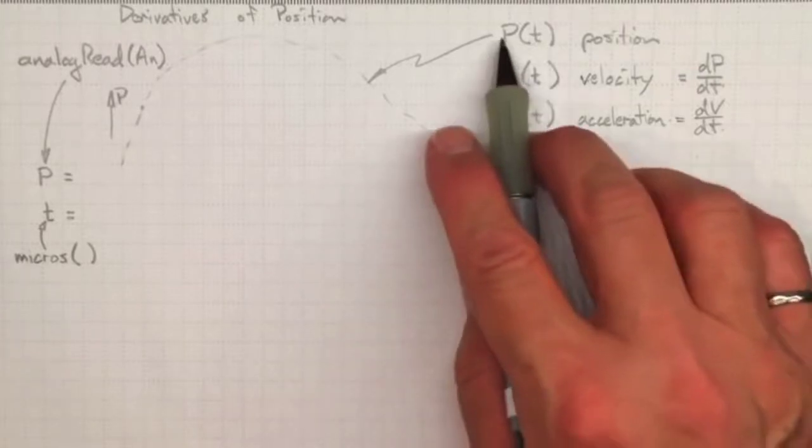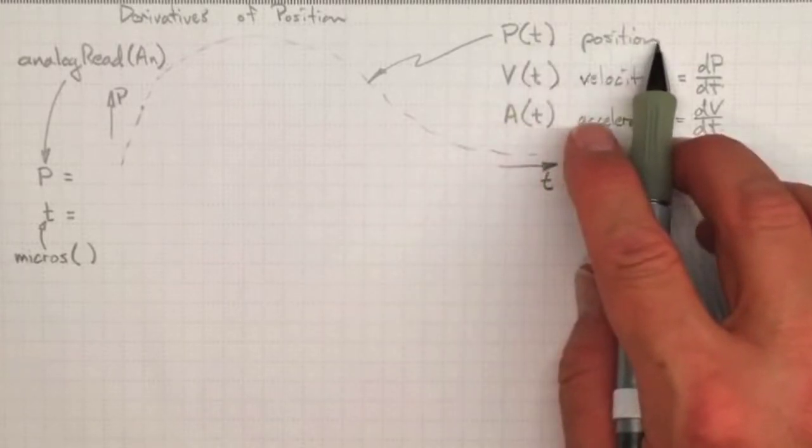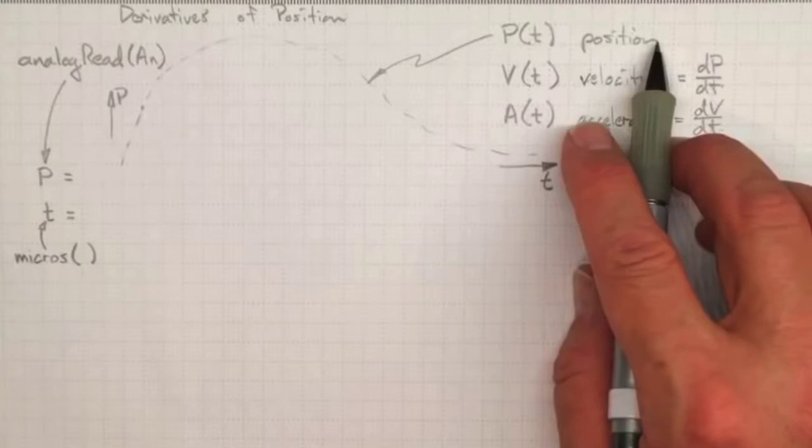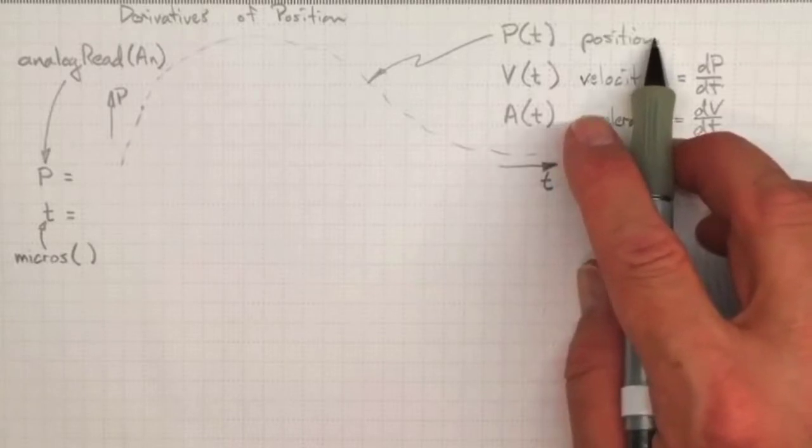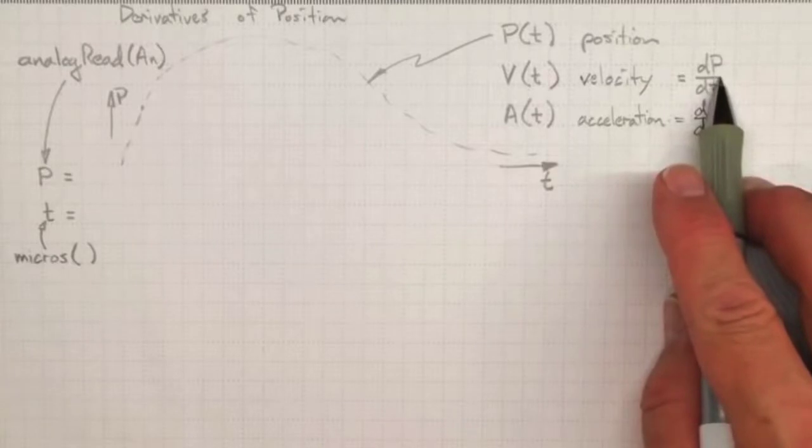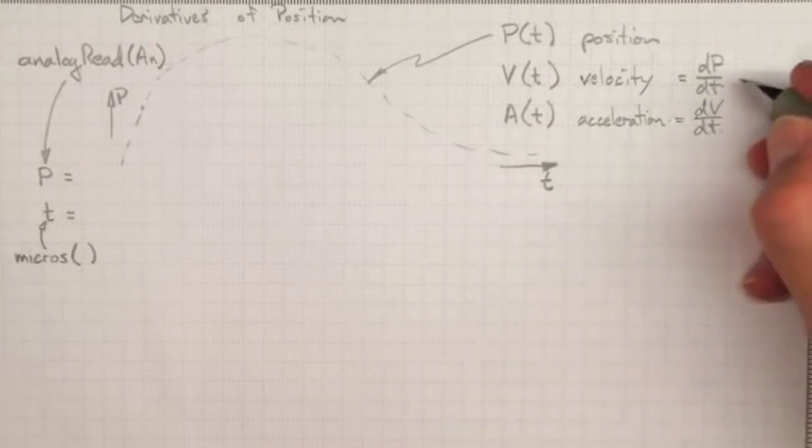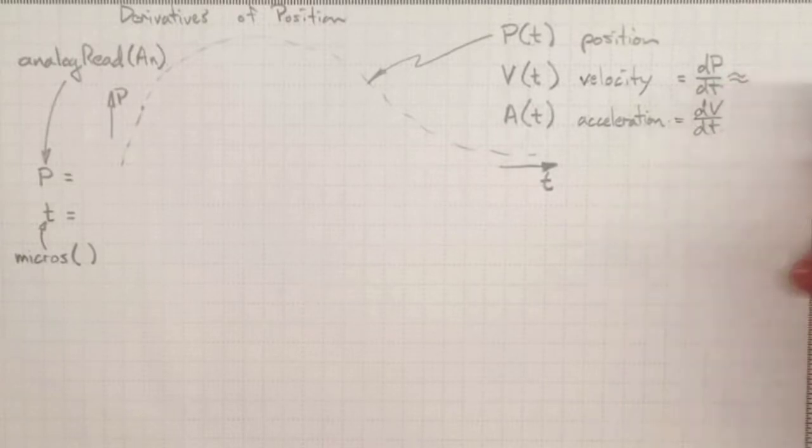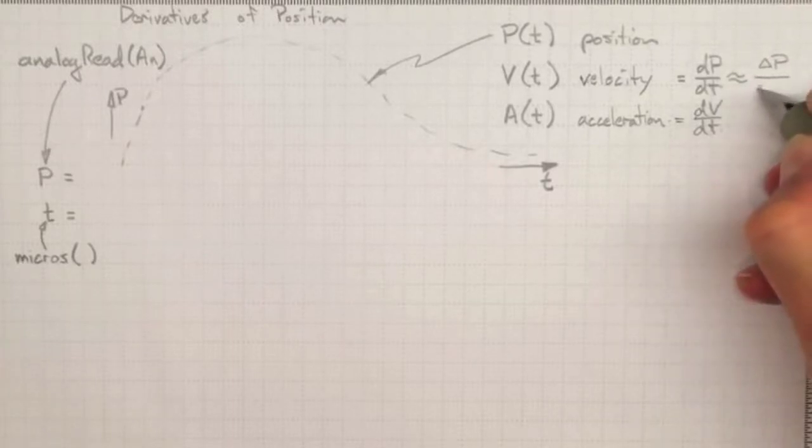Generally, we won't know this position function as a nice analytical function that we can do pencil and paper mathematics with. So we're going to have to approximate these derivatives, which is a lot easier for those of us who aren't very good at calculus. That derivative will be approximately the amount that the position changes divided by the length of time it took to change.